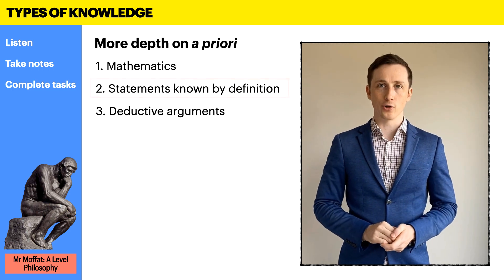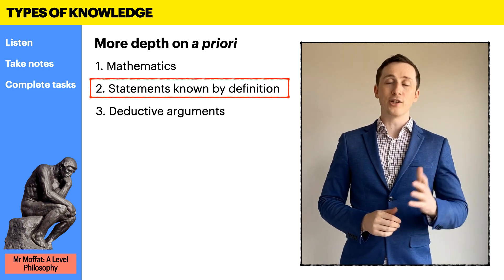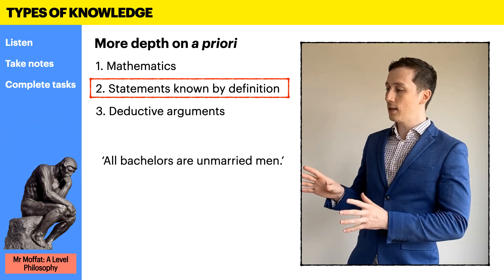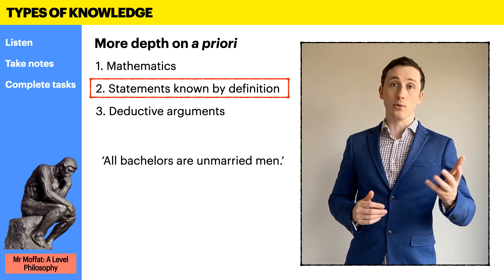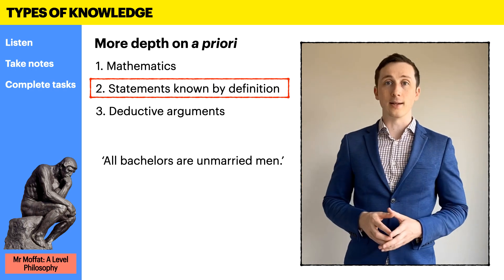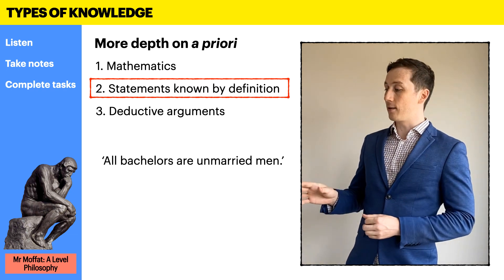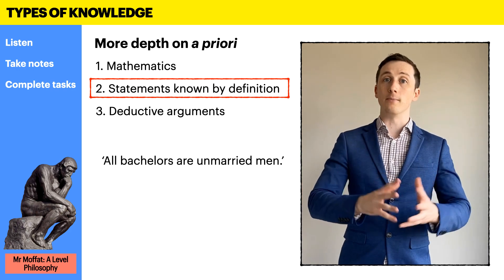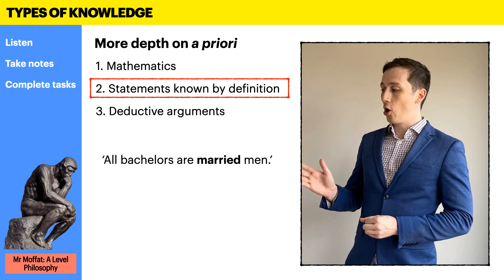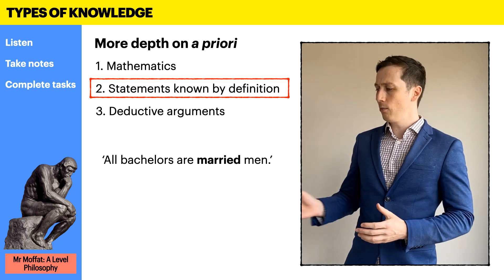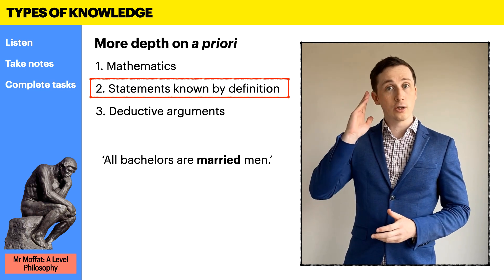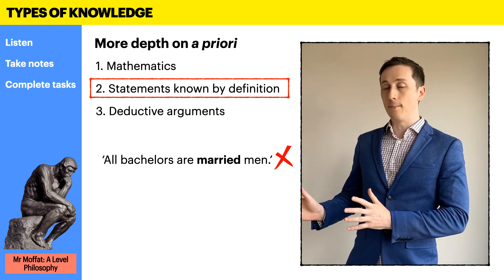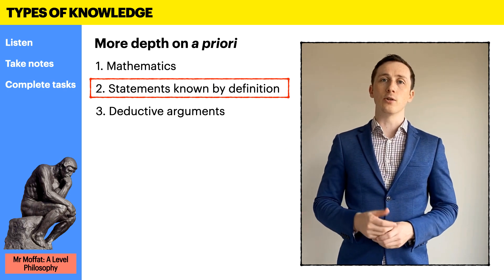Let's explore the second category first. Take for example the statement: 'All bachelors are unmarried men.' If you look at that statement, we know it is true — or would know it is false — just by understanding the sentence itself. Once we understand that the word 'bachelor' means unmarried man, we know that by definition all bachelors are unmarried men. Likewise, if the statement were 'all bachelors are married men,' we would know just by reading and understanding it, using our reason alone — a priori — that that statement would be false. So this is an example of knowledge we can have just using our reason.